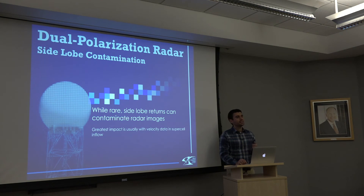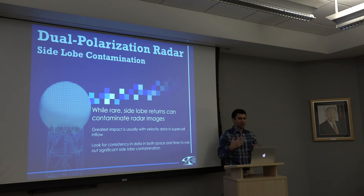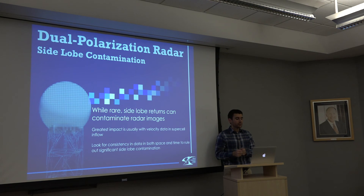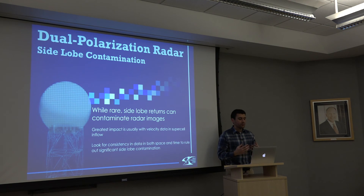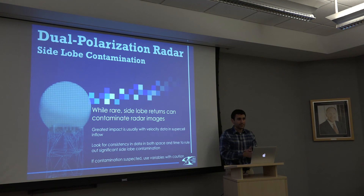Side lobe contamination, while rare, can contaminate radar images, and we want to know when it pops up. The greatest impact is usually on velocity data in the supercell inflow area. What we want to do is look for consistency in the data — both in space and time. We want to see how it evolves over different variables and over time: is it jumpy and noisy, or a nice smooth signal? If it's really noisy or jumpy and doesn't make sense, we may be seeing significant side lobe contamination from higher up in the storm, giving us a velocity image we can't trust. If we suspect contamination, use those variables — especially velocity data — with quite a bit of caution. And with that, we wrap up our side lobe contamination module.